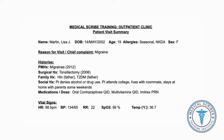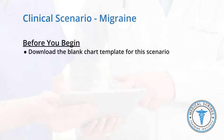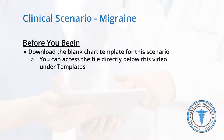The patient in this scenario is Lisa Martin, a 19-year-old female with a past medical history of migraines that occur about once a month. Take some time to review the patient's medications, histories, and vital signs, which have been added to the chart note for you. Before you begin the patient encounter, make sure you have downloaded and opened the blank chart template for this scenario, accessible beneath the lesson video under Templates.